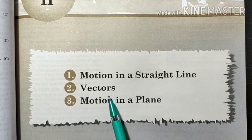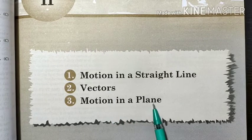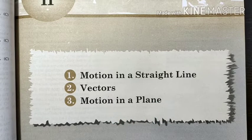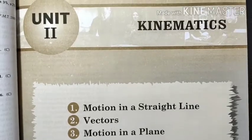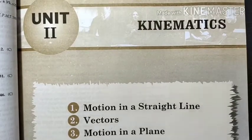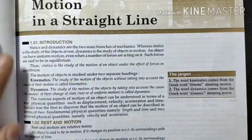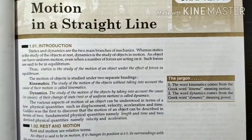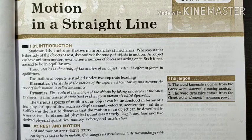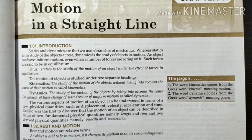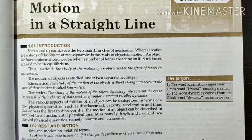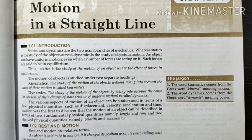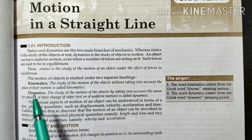After this chapter we will study vectors, then motion in a plane. Unit 2 consists of 3 chapters in total. Let's start today with the first chapter: Motion in a Straight Line.